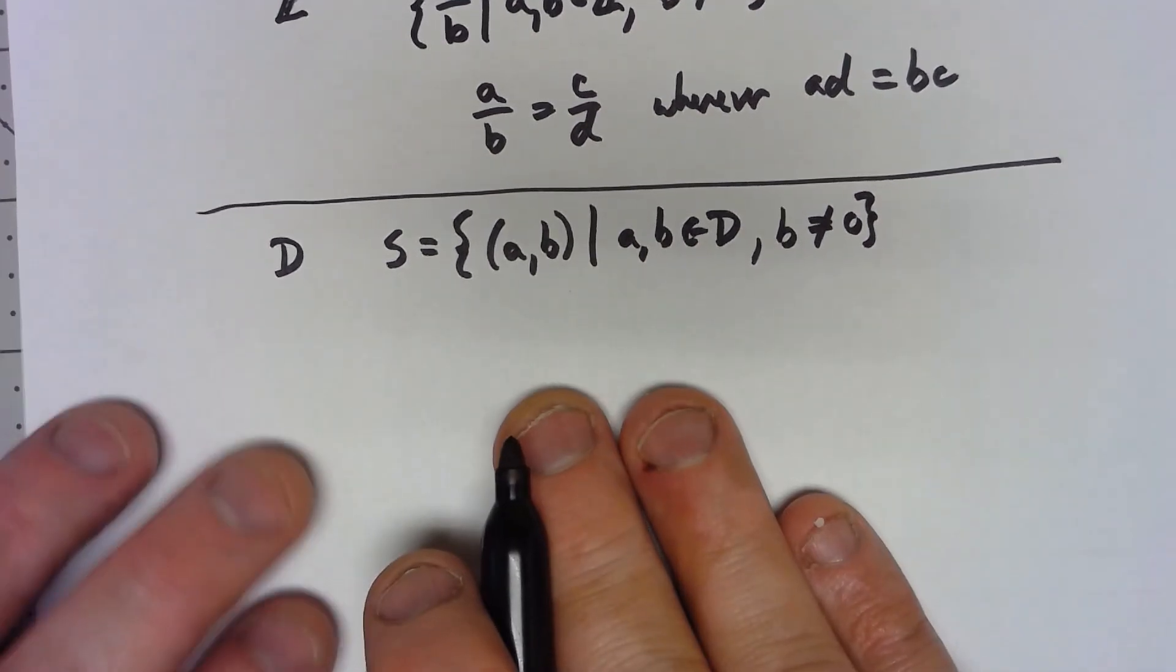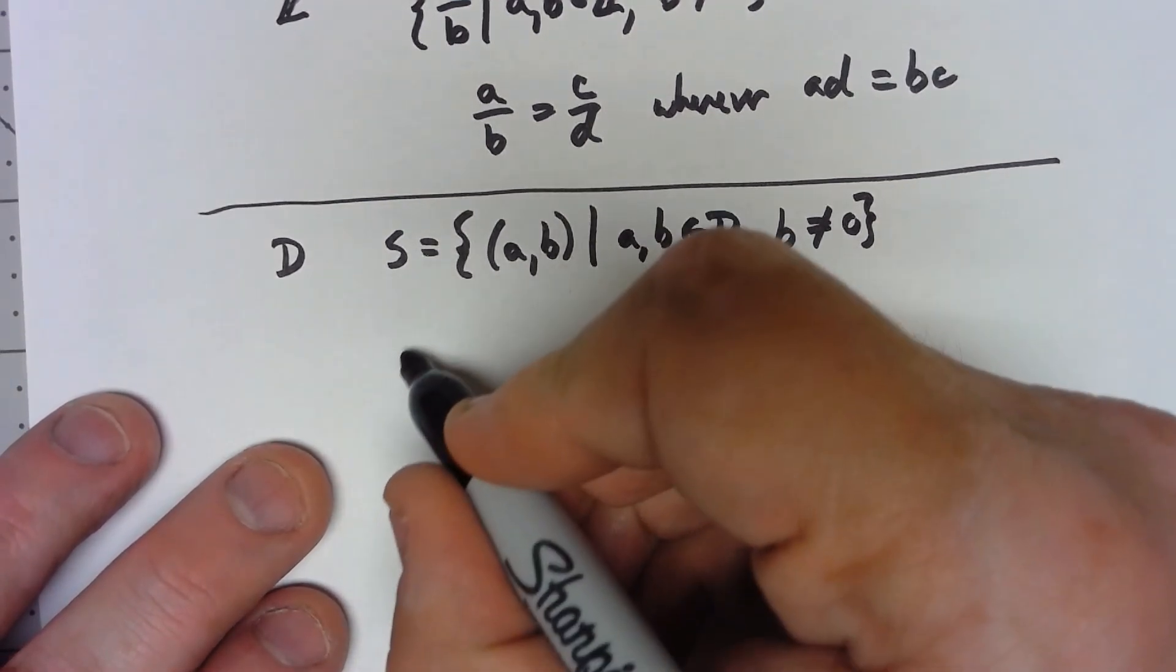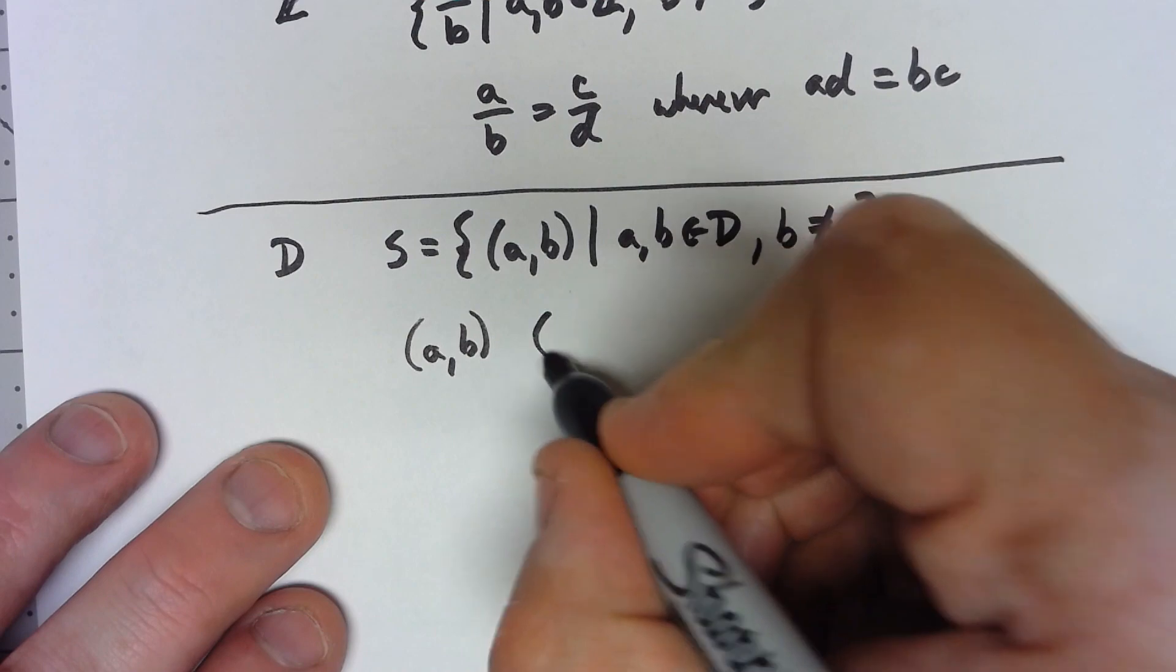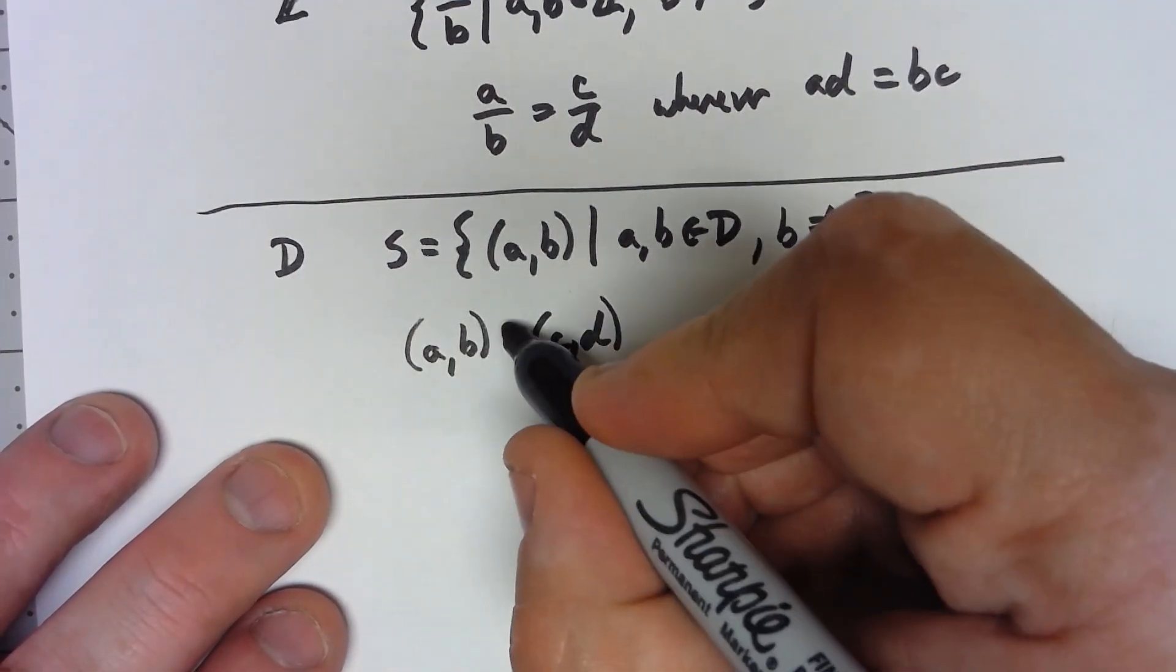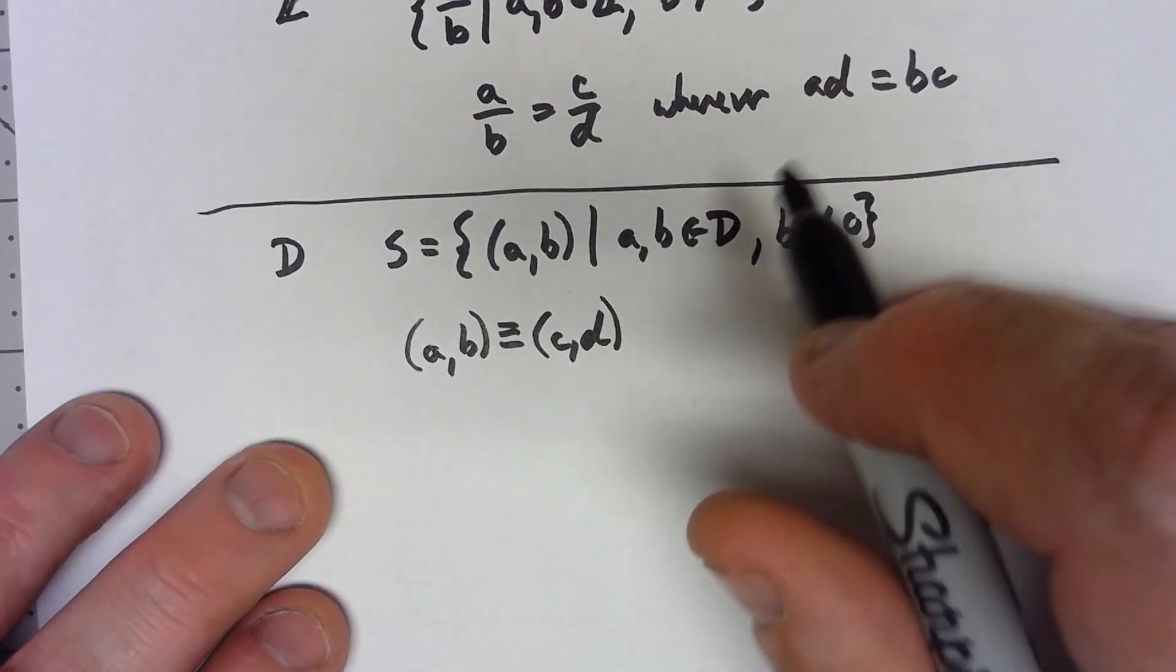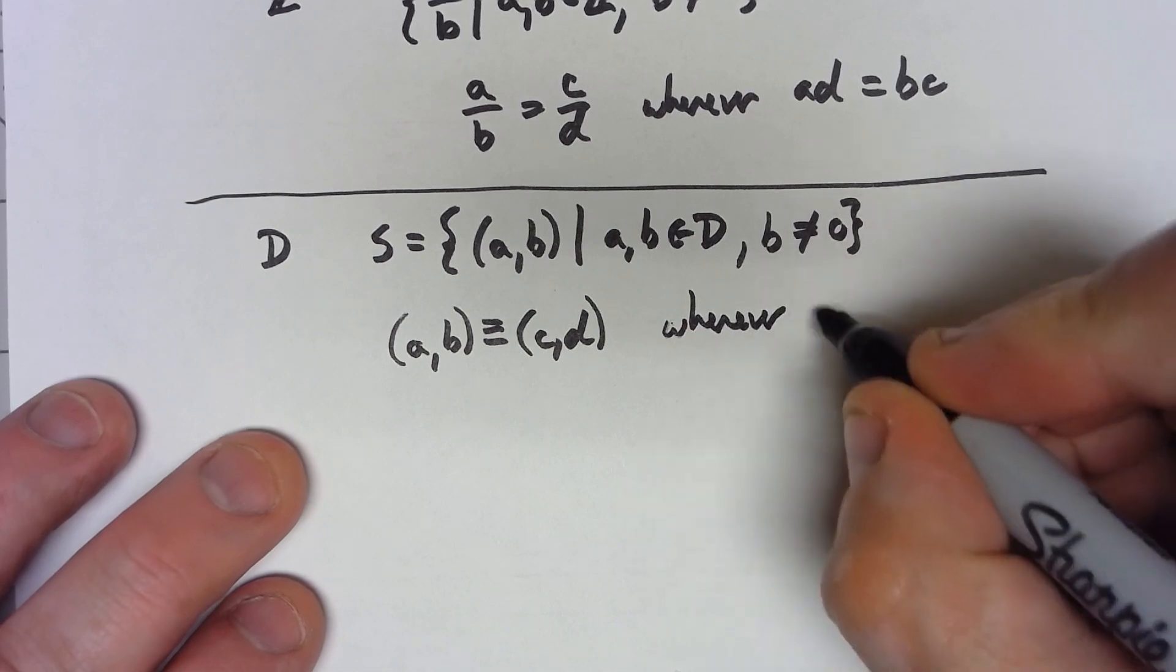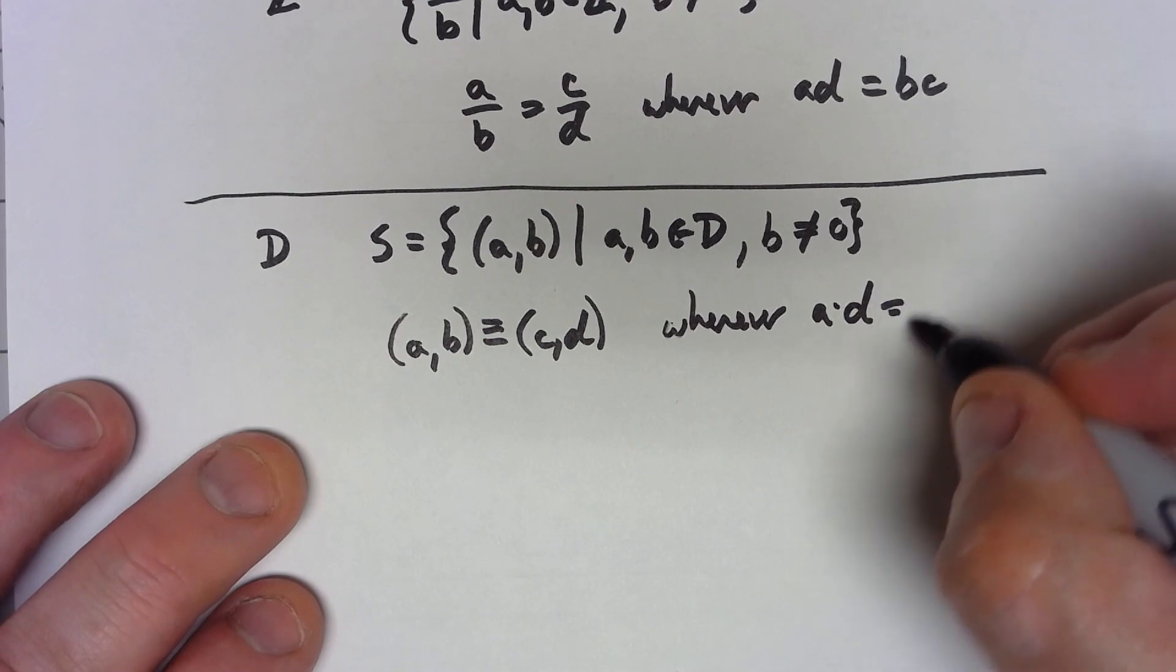We're then going to go ahead and say that we're going to create equivalence classes. We're going to say that two elements (a, b) and (c, d), we're not going to actually call them equal, we're going to say they're equivalent whenever, same exact thing as we did for the integers, whenever a times d is equal to b times c.